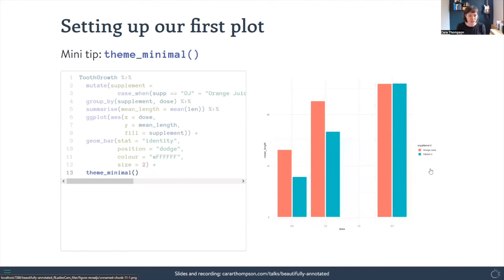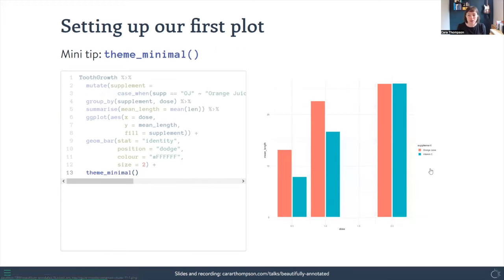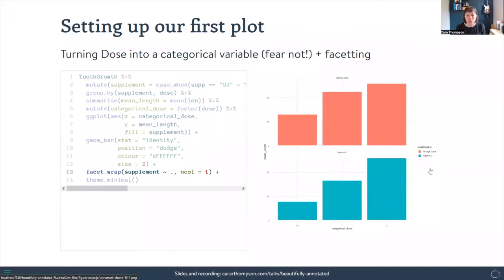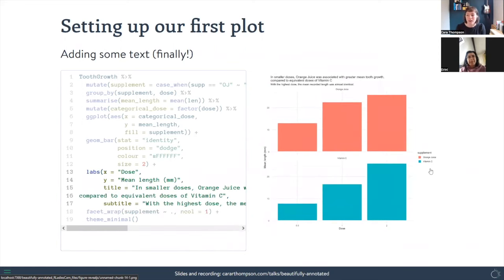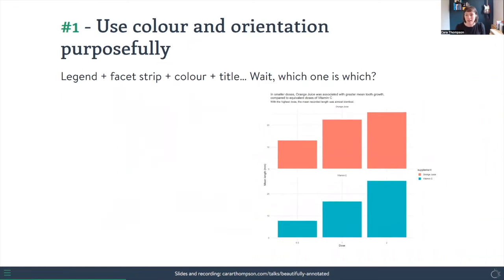The next mini tip is to change to theme_minimal — do that as early as possible when creating a plot, it just declutters things. We're also going to turn dose into a categorical variable because there was a gap in the plot that doesn't make sense for how we're reporting it. We'll wrap it using facet_wrap to separate out Vitamin C and Orange Juice. Then we add text — a title, axis titles, and a subtitle — so we can see what story we're trying to tell.